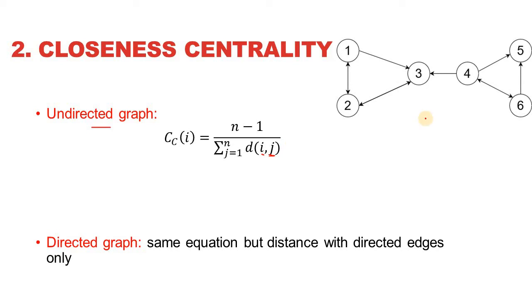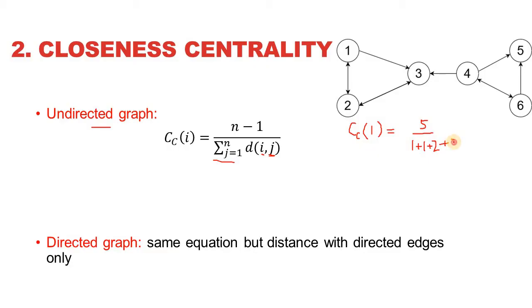Let's calculate it for the given graph, considering the edges to be undirected and all edges having cost equal to 1. The closeness centrality for node 1 is 6 minus 1, which is 5, divided by the sum of shortest distances: node 2 is at distance 1, node 3 is at distance 1, and continuing through node 6, giving us 5 divided by 10, which is 0.5.